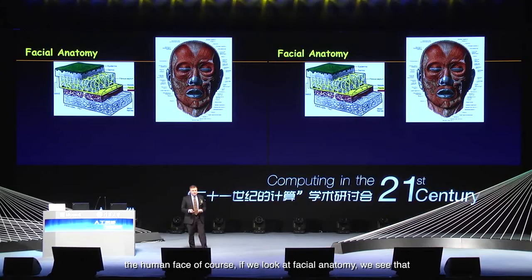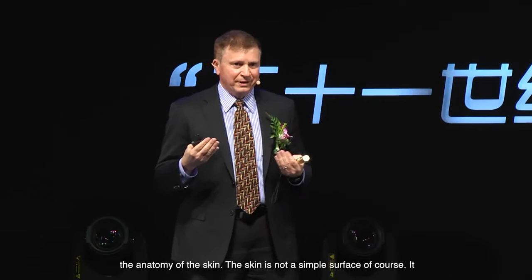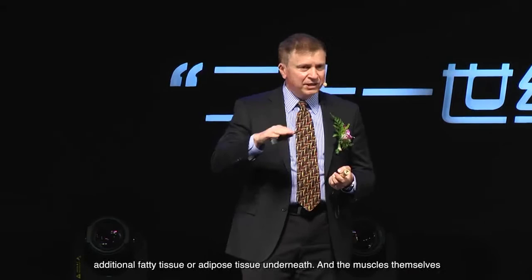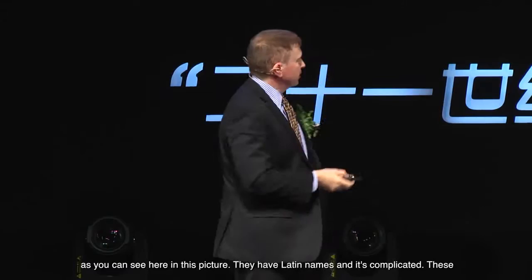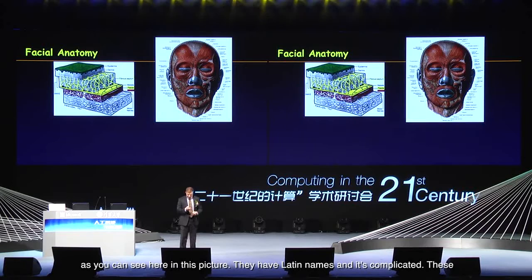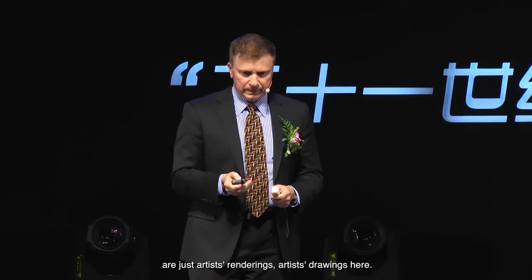What we're trying to do in our research is close the gap between appearance and behavior. For the human face, if we look at facial anatomy, we see that the skin is not a simple surface — it involves multiple biological tissue layers: epidermal layer, dermis, fatty tissue, embedded muscles, and additional adipose tissue underneath. The muscles themselves are highly complicated; there are many muscles even in the human face with Latin names, as seen in this picture.